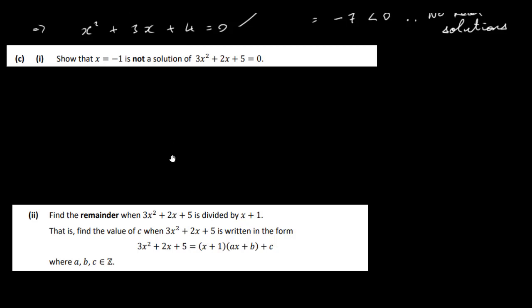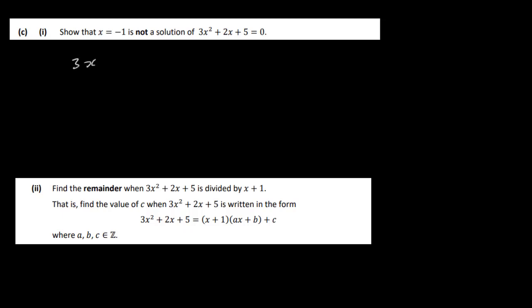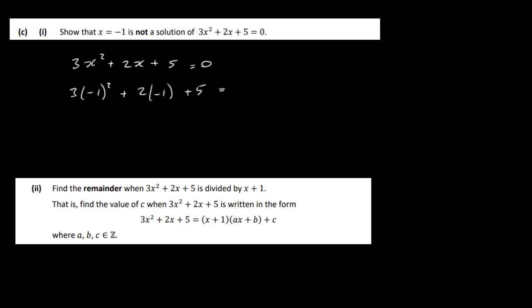The next part says: show that x equals minus 1 is not a solution to 3x squared plus 2x plus 5 equal to 0. All you've got to do is substitute in minus 1: 3 times minus 1 squared plus 2 times minus 1 plus 5. That gives 3 minus 2 plus 5, which equals 6. That is not equal to 0, therefore x equals minus 1 is not a solution.